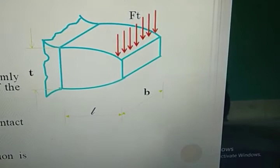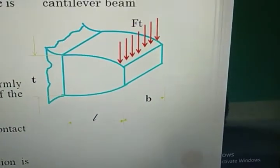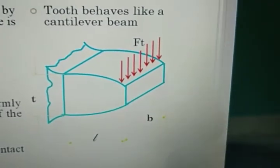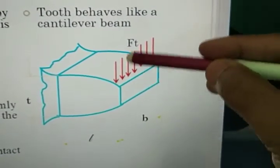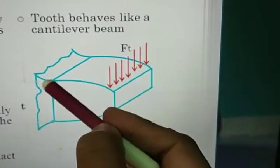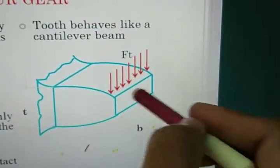In Lewis analysis, gear tooth is treated as cantilever beam. So here we have the figure, gear is treated as cantilever beam. And this tangential component, Ft, causes the bending moment about the base of the gear. And that's why the bending failure is there.